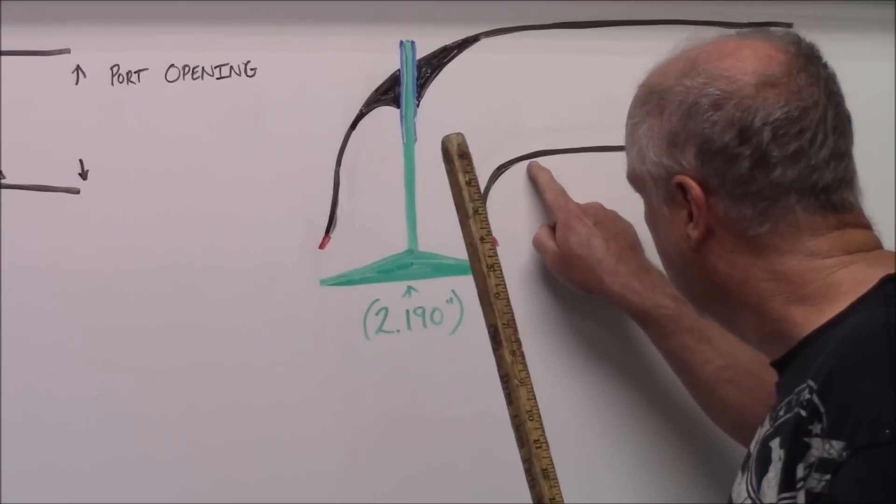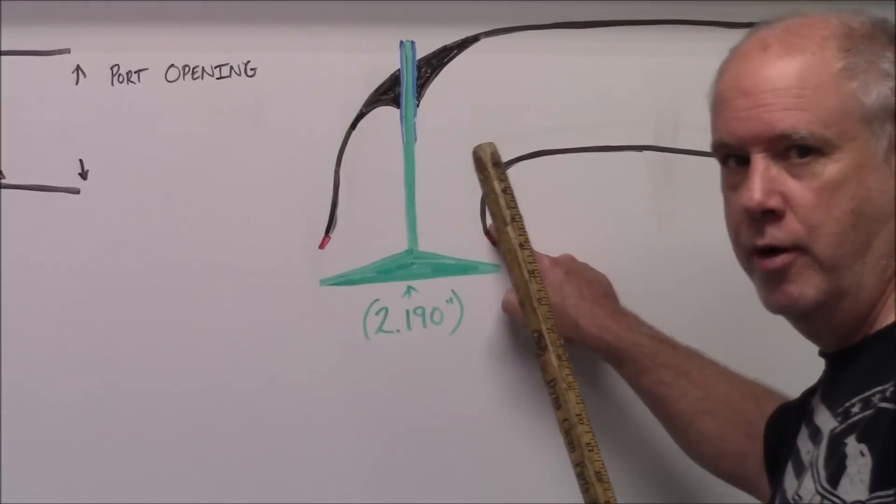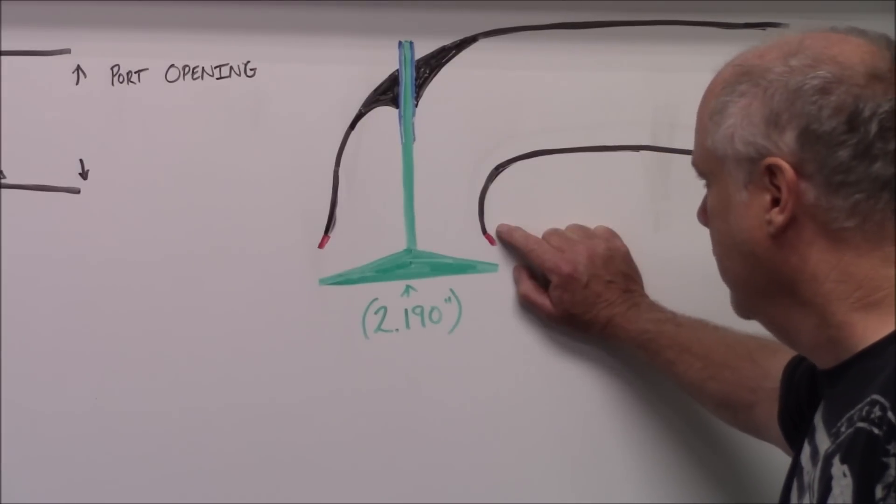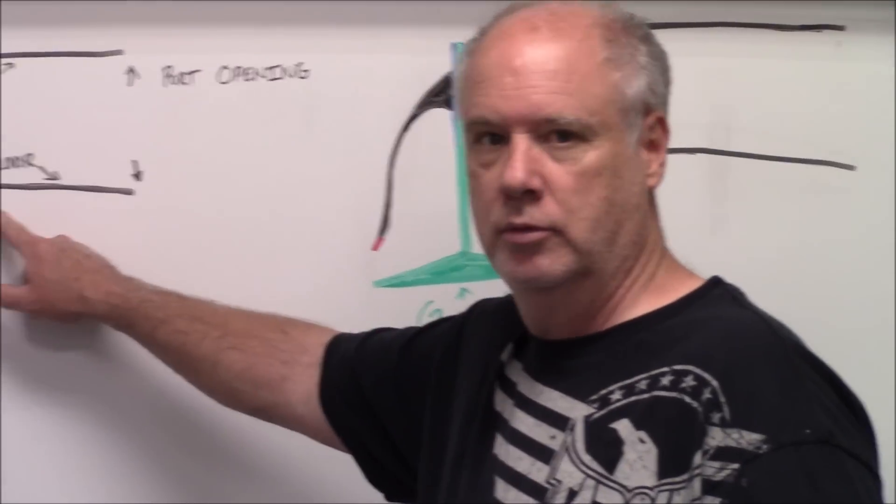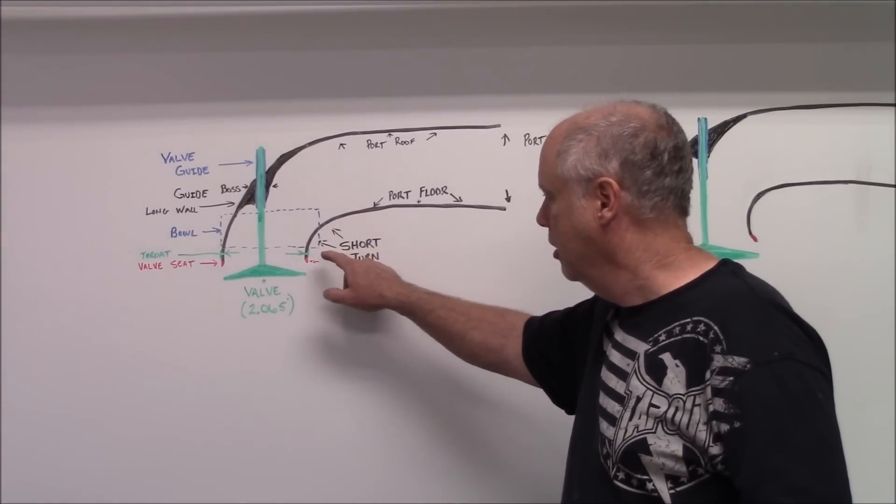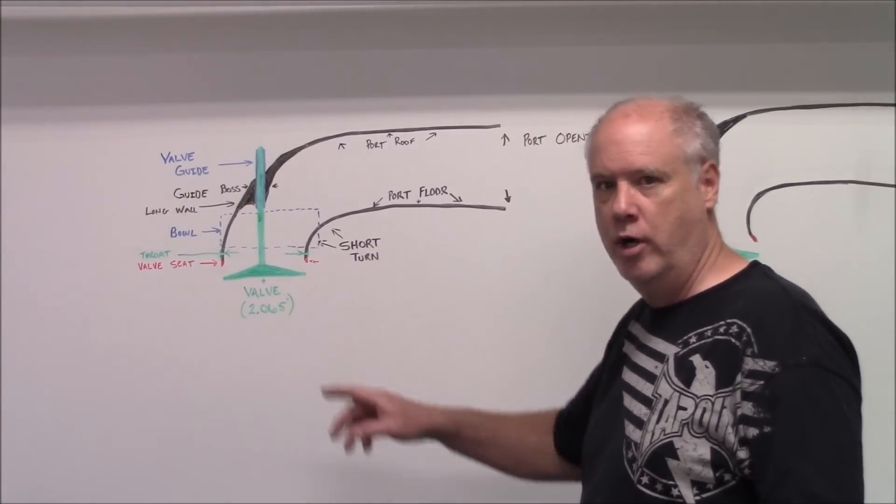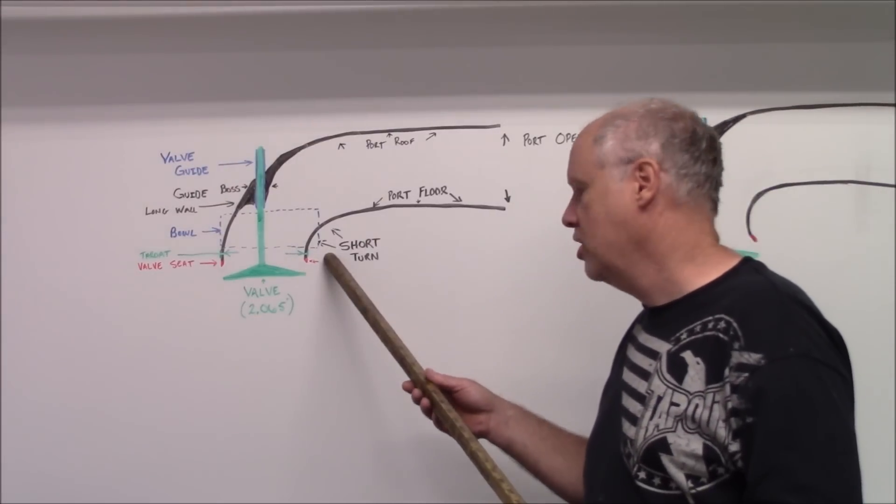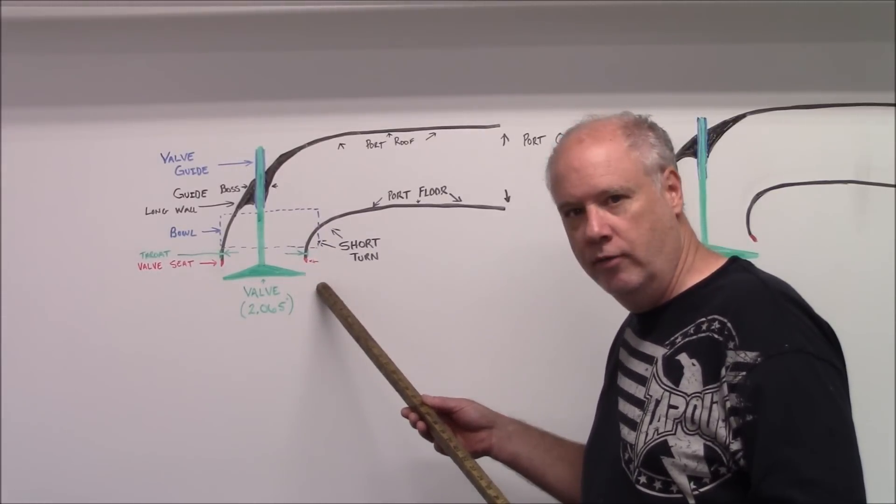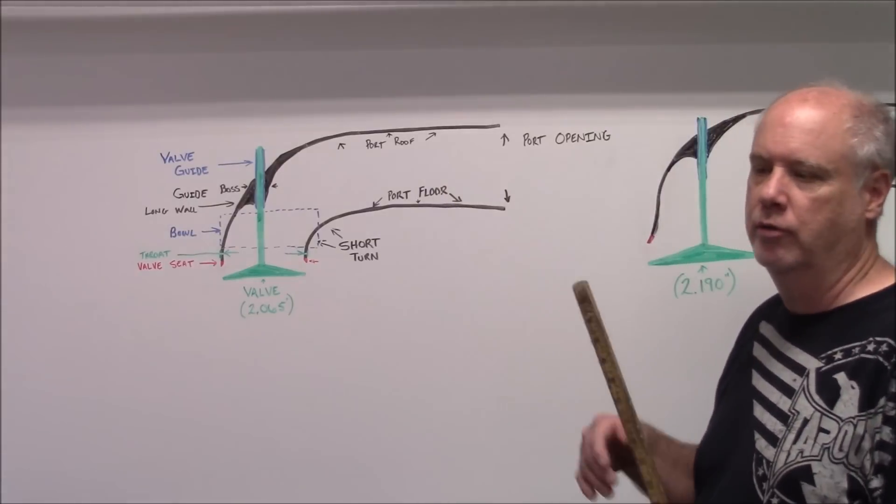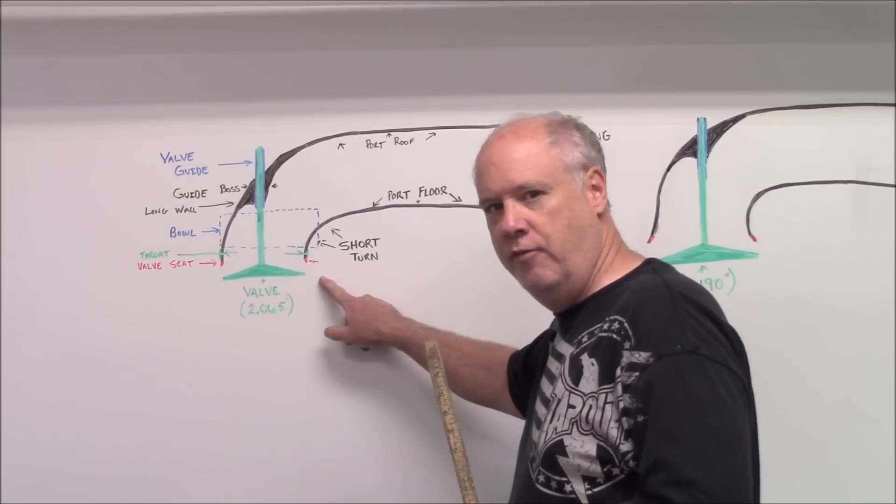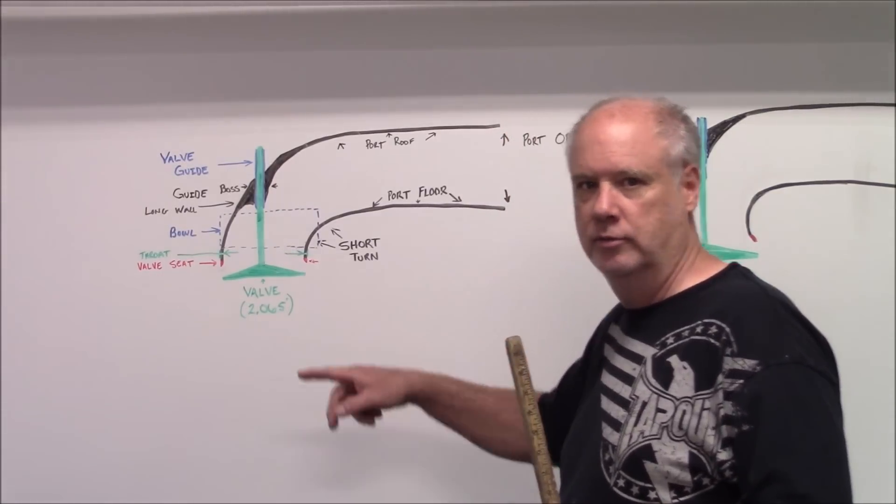This shape right here is very important. This port here, in general, when it's flow tested, will usually flow past 500 lift. What I mean by that is, let's say it flows 270 at 500 lift, and we lift this valve to 600 lift, it flows 275. These are just general flow numbers, just for examples. What I mean is, it picks up 5 CFM going from 500 lift to 600 lift.